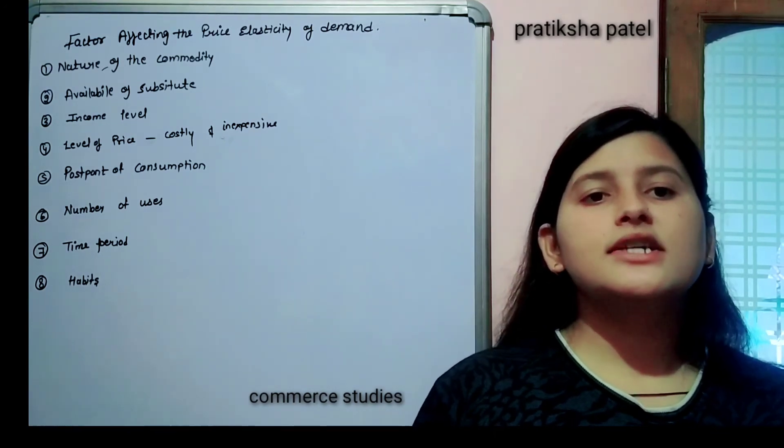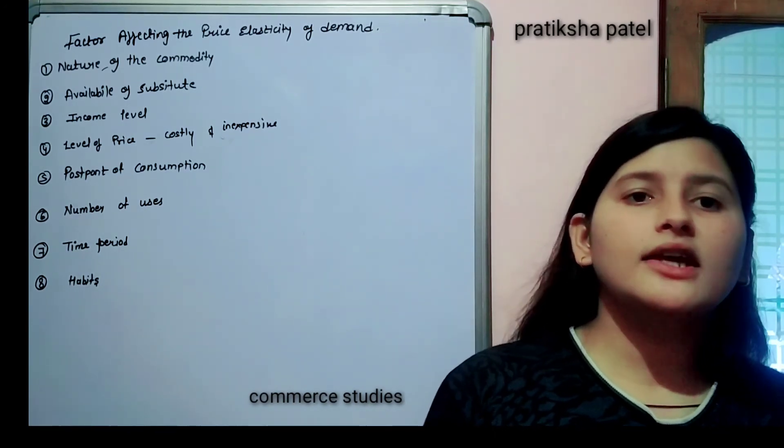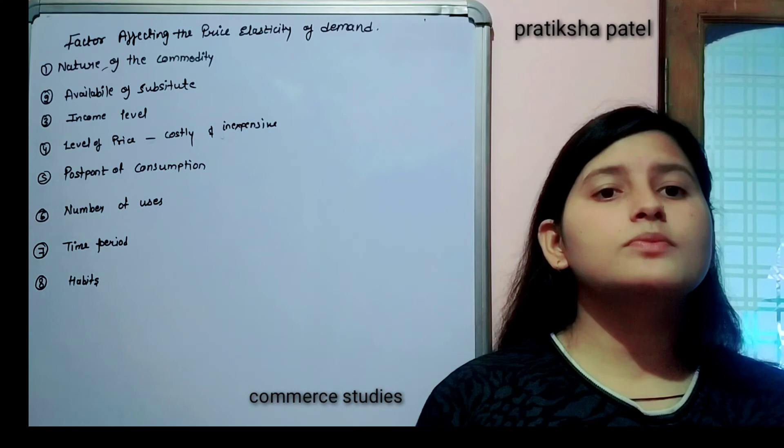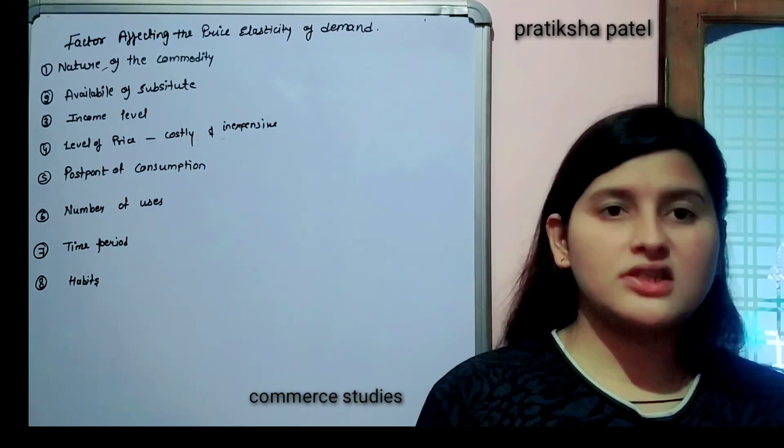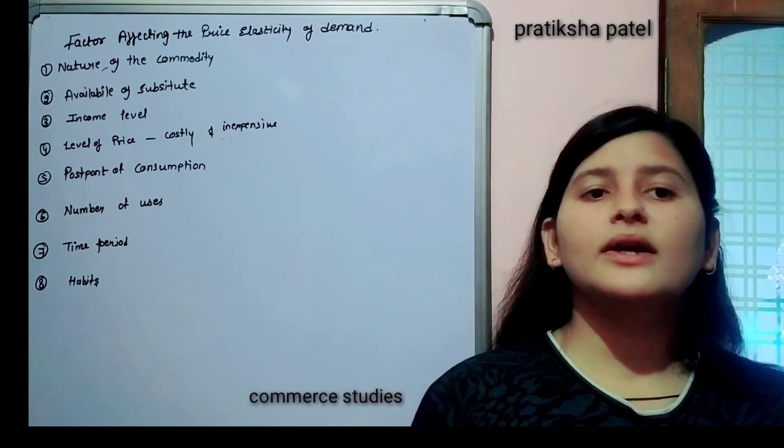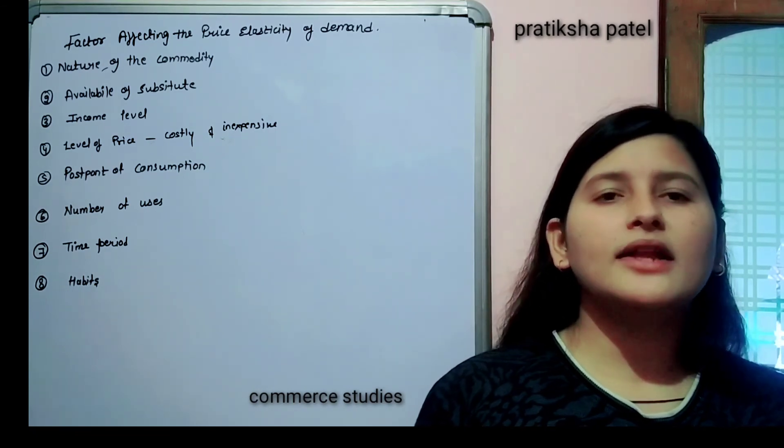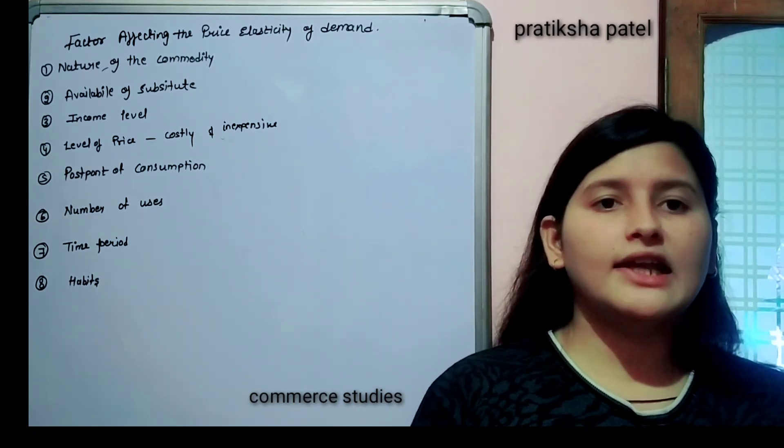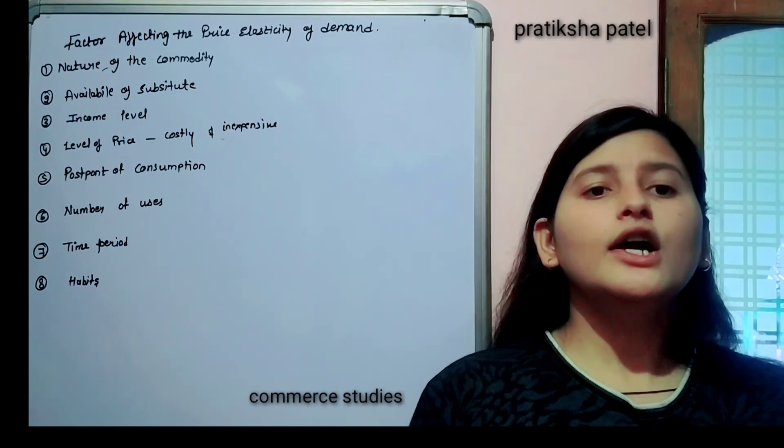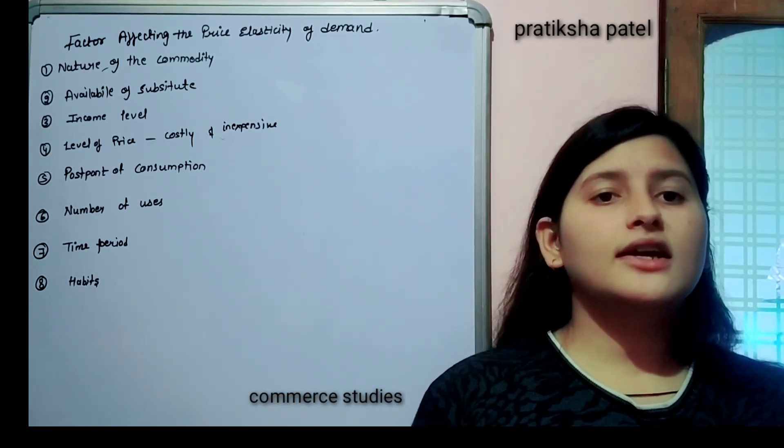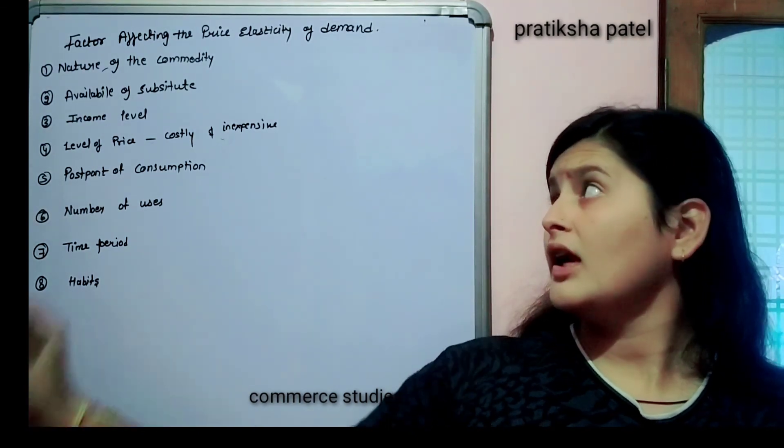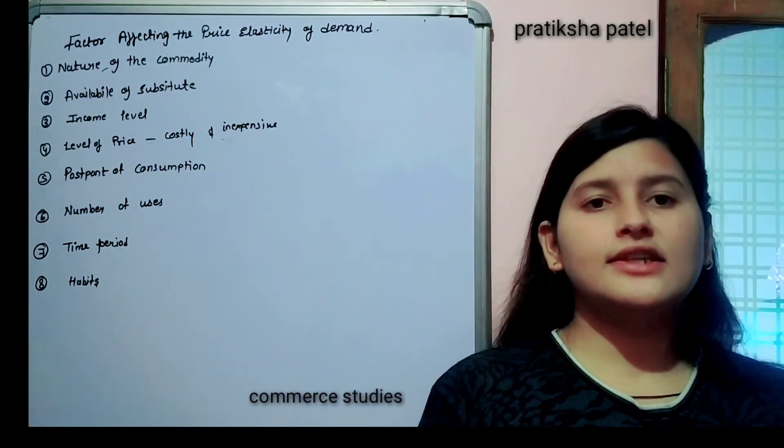Habits - what happens is that generally when we develop habits of things, habit is formed. Like people drink tea, in the morning and in the evening also people drink tea. So when people develop a habit, then there are very less chances that we can change it. It becomes our habit, so we have to consume it, we cannot deny. We cannot deny it, because it becomes like a later type. Like people with cigarette, tobacco, alcohol, when they consume all these, what happens is those people become addictive to that thing. So they have to take that thing. So whether price increases or decreases, people don't face any difference. This is what habit is.